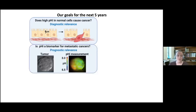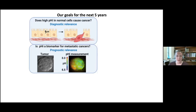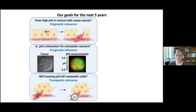Additionally, if we can determine that pHi predicts metastasis, this would allow us to perform non-invasive pHi imaging of a patient's tumor in order to determine if that patient is likely to have recurrence or metastasis of their primary tumor. And finally, if we can show that lowering pHi specifically kills cancer cells, this would enable using pHi-altering drugs to treat metastatic disease.